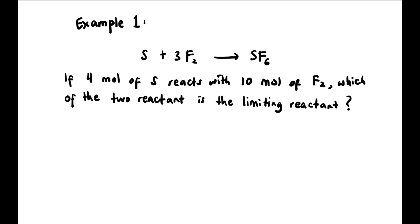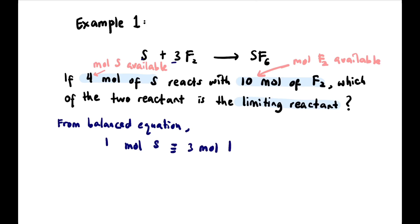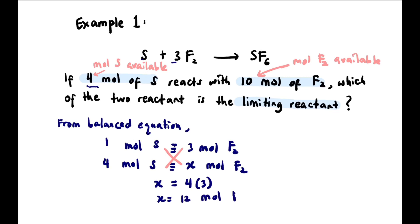Let's look at the first example: S + 3F₂ → SF₆. If 4 moles of S reacts with 10 moles of F₂, which reactant is the limiting reactant? We have 4 moles of S available and 10 moles of F₂ available. From the balanced equation, 1 mole of S reacts with 3 moles of F₂. If we have 4 moles of S, how many moles of F₂ are needed? Cross-multiplying gives x = 4 × 3 = 12 moles of F₂ needed to react with 4 moles of S.